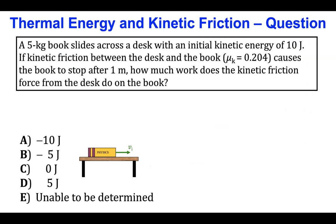We will explore this in a problem investigating how thermal energy is related to kinetic friction forces, where we slide a book across a desk with an initial kinetic energy of 10 joules. As the book slides across the desk, kinetic friction slows it down and the book stops after traveling one meter. The question is: how much work does the kinetic friction force from the desk on the book actually do to cause the book to stop? Think about this — we'll pause the video and come back with an analysis.